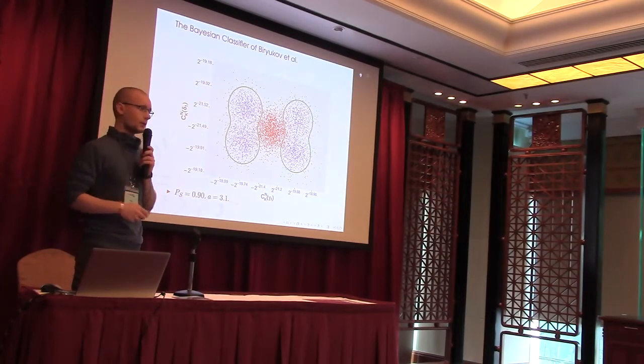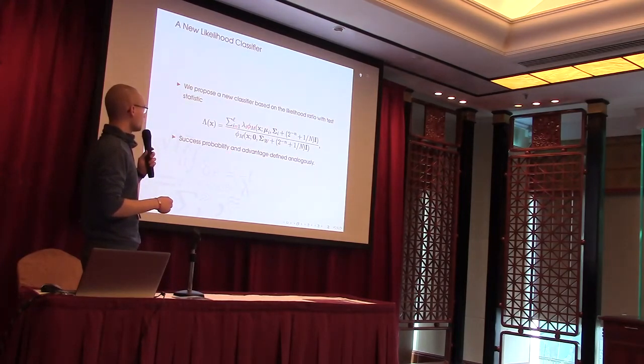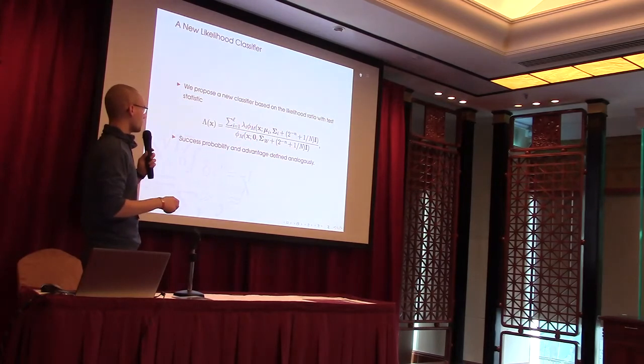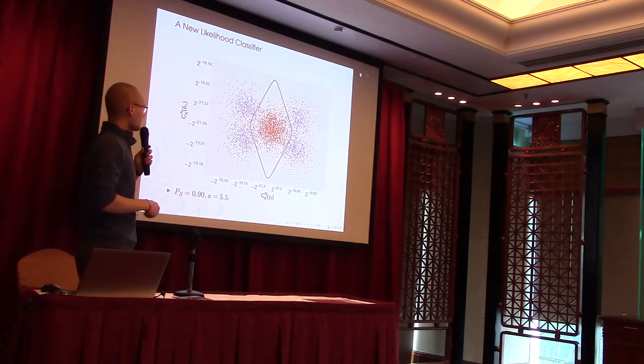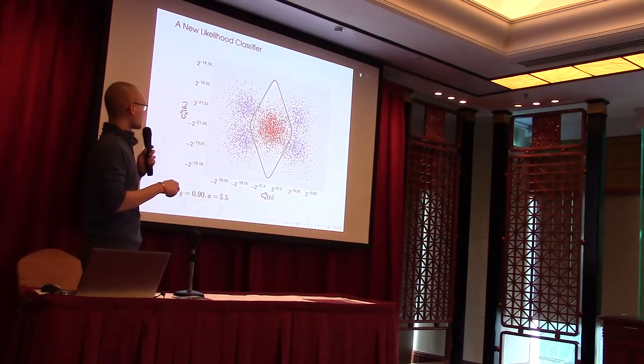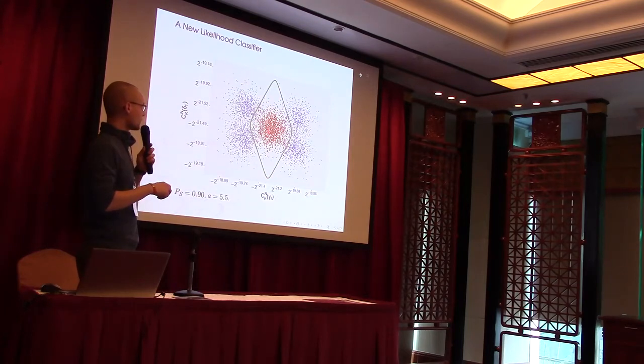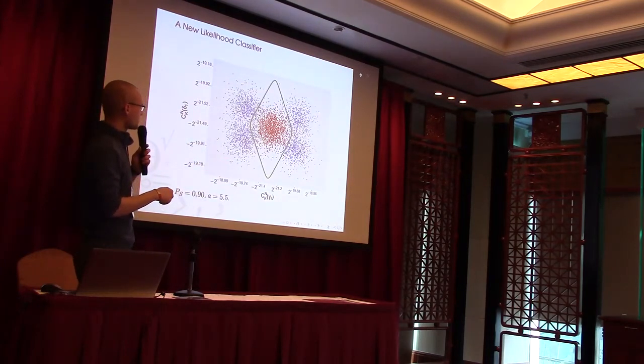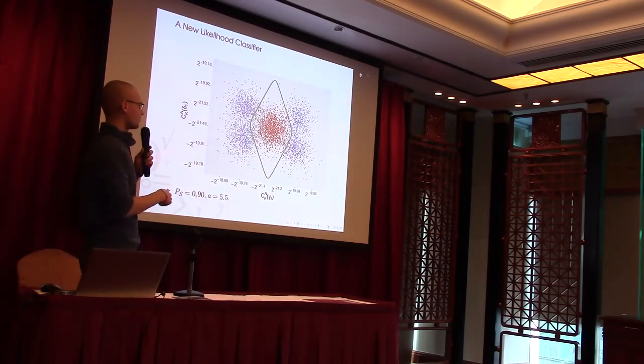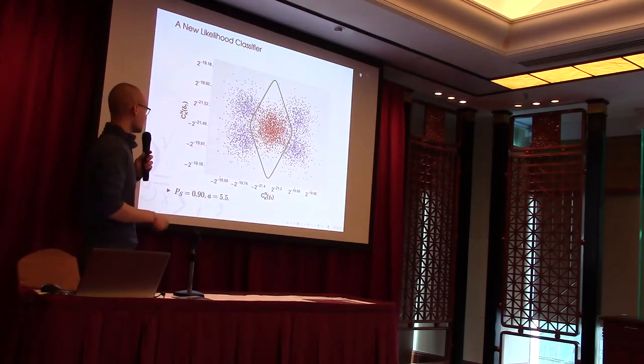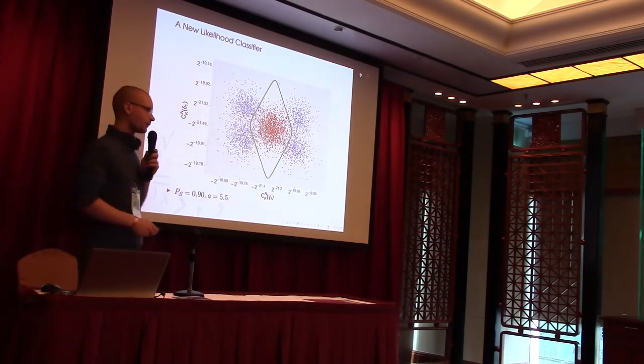So what we propose is a new classifier which takes into account both the right key probability and the wrong key probabilities. This is basically just the likelihood ratio of an observation occurring. And if you look at the picture for that, then this distinguishing line here looks quite differently. So anything in here will be classified as a wrong key and anything outside will be classified as a right key. This is something like what you would draw if I told you to draw this intuitively. So anything out here will also be classified as a right key guess which intuitively makes sense. And we can see for the same success probability we get a boost in advantage. Higher advantage is good. We actually get a couple of bits just by changing our classifier a bit.